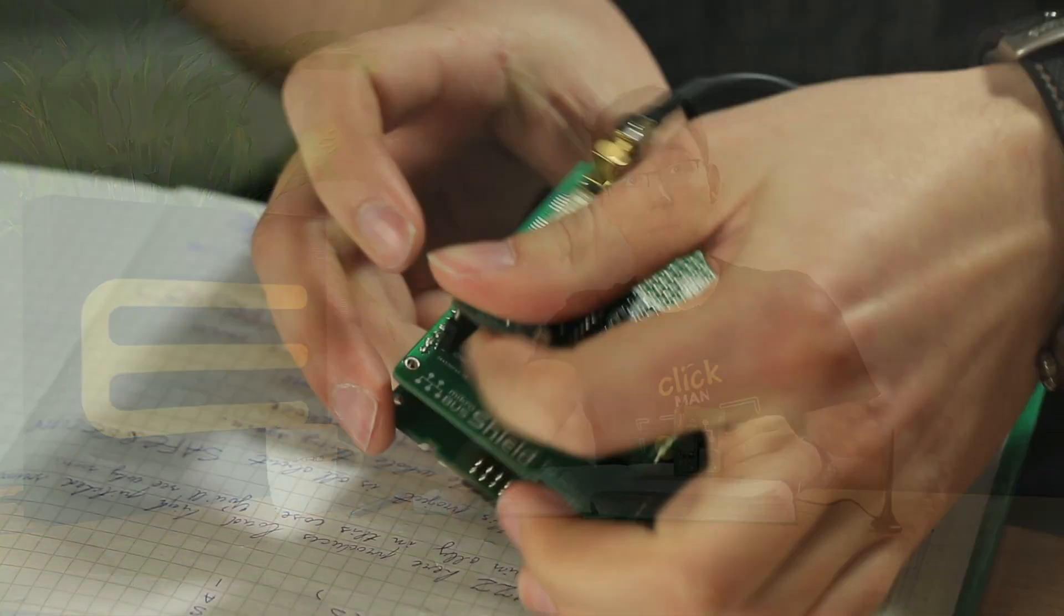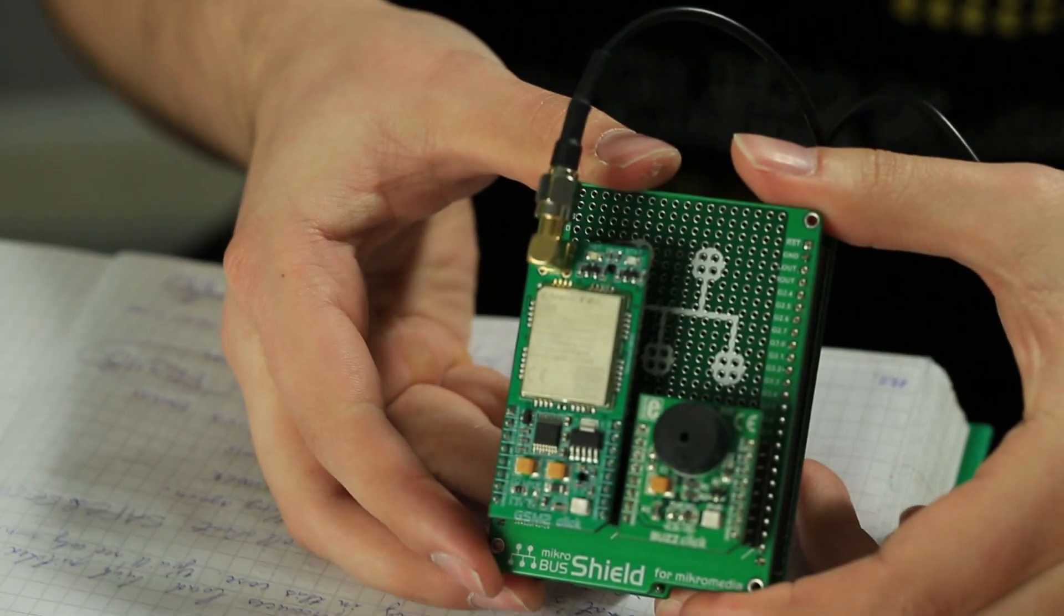The GSM to click is there to send a warning message to your phone in case an intruder has been detected. That's what this whole project is all about. Safe and secure.